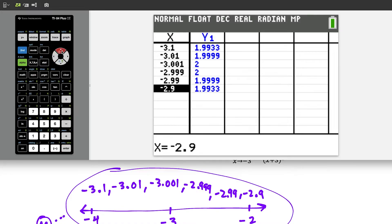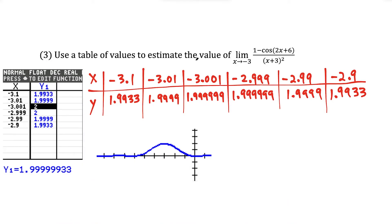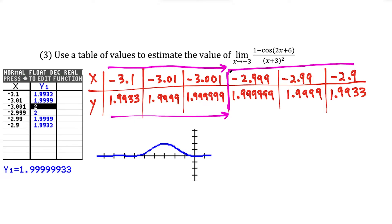One thing that jumps out right away is that the y values are showing up equal to 2. But if we scroll up to them, notice it's not exactly equal to 2 — the calculator can't fit that many nines in that small space, so after a certain point it rounds. Scroll up to the specific number to see the exact value. Now let's use this table to estimate the limit. X is approaching negative 3, which is between these two x values. Approaching from the left, as x gets closer to negative 3, the y values are getting closer to 2. Approaching from the right, the y values are also getting closer to 2. So our estimate for the limit is equal to 2.